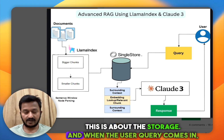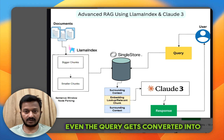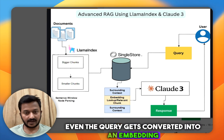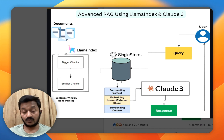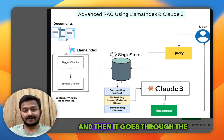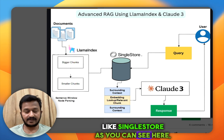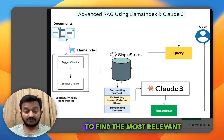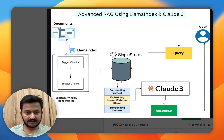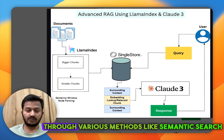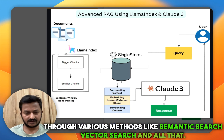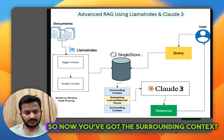When the user query comes in, the query also gets converted into an embedding via an embedding model, and then it goes through a vector database like SingleStore to find the most relevant chunk and context information through various methods like semantic search and vector search.